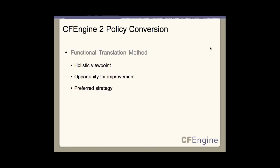When converting policies using the functional translation method, remember that you're recreating the policy from a holistic viewpoint. If possible, don't get caught up in the way it was originally scripted. Look at the condition, state, or problem that the policy was designed to address from a CFEngine 3 perspective. Rewriting the solution will give you the ability to utilize the new functionality and the benefits inherent in CFEngine 3. You could easily go from 100 lines of CFEngine syntax down to maybe 10 at tops — I've seen examples of that. Rewriting the solution using the new features is the preferred way.